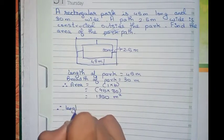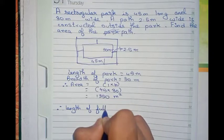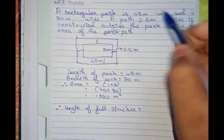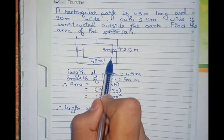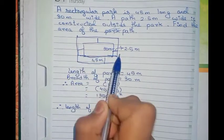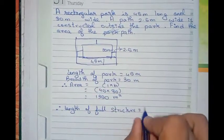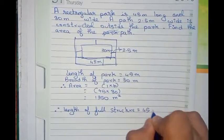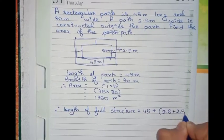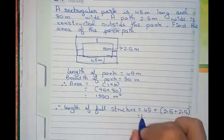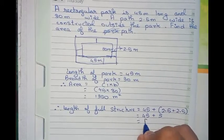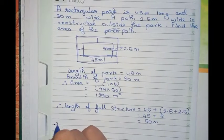Therefore, the length of the full structure — meaning the full rectangle — equals: since we are taking the full length, we have to add 2.5 meters on both sides. So that means 45 plus 2.5 plus 2.5. The 2.5 plus 2.5 is 5, so 45 plus 5 equals 50 meters. Similarly, we do the same with the breadth.